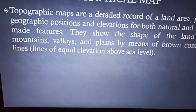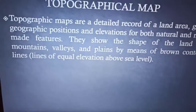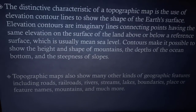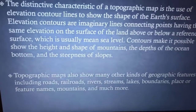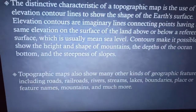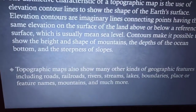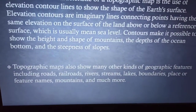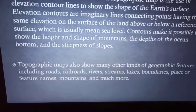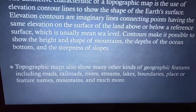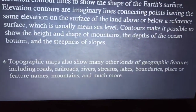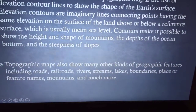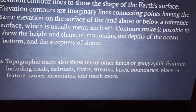With the help of contour lines we can identify what type of feature is present in a particular region. The distinctive characteristic of topographical maps is that they use elevation contour lines to show the shape of the earth's surface. Elevation contours are imaginary lines connecting points having the same elevation above or below the mean sea level. Contours make it possible to show the height and shape of mountains, depth of the ocean bottom, and steepness of slopes. Topographical maps also show roads, railways, rivers, streams, lakes, and boundaries.